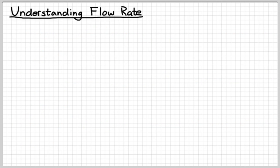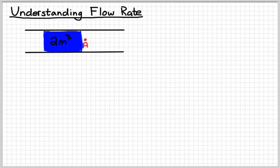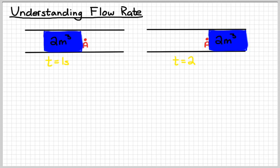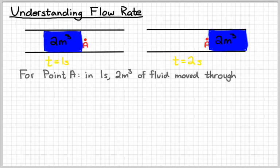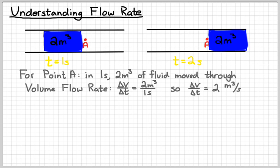So let's see if we can understand what flow rate means. Imagine that you have a pipe, and we pick an imaginary point in the pipe called point A. And let's just say that this represents two cubic meters of fluid. Now understand that there's still fluid throughout the pipe, we're just focusing on that particular chunk. So let's suppose that this represents the fluid at time t equals one second. And then a second later, that two cubic meters of fluid has moved to the other side of point A. What that shows us is that two cubic meters of fluid has gone by point A in one second. That means that the volume flow rate, which we symbolize as delta V over delta T, is two cubic meters in one second or two cubic meters per second.